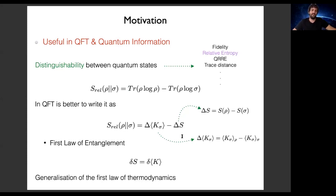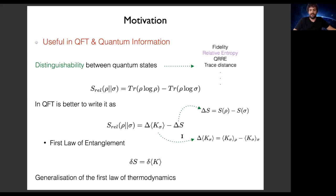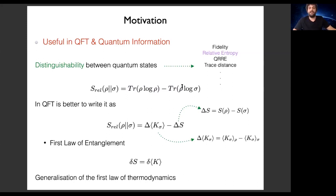My motivation to study modular Hamiltonians: they are useful in many branches of physics. In particular, knowing the modular Hamiltonian allows you to compute the relative entropy in quantum field theory. The relative entropy measures the distinguishability between quantum states — it is a sort of distance between states in the Hilbert space. This is complicated to study in quantum field theory in general, though there are some works in conformal field theory.